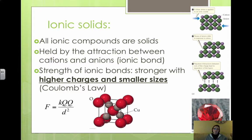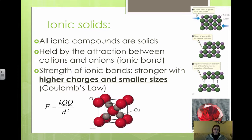For example, magnesium oxide, MgO, melts at 2,852 degrees Celsius, whereas sodium chloride, which is plus 1 and minus 1, melts at 801 degrees Celsius. Magnesium oxide has higher charges and the ions are smaller, so it has a higher melting point because that ionic bond is stronger.